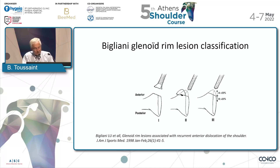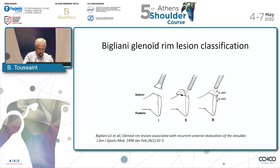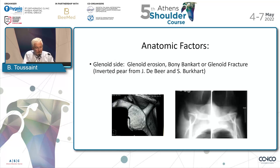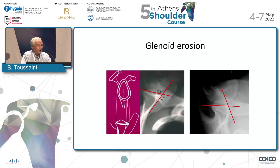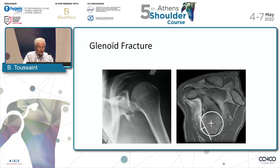The glenoid rim fracture is very, very important — you have seen this this morning. The first to develop a classification was Bigliani, with the Bigliani glenoid rim lesion classification in three stages. It is very important to check the glenoid side, because there is not only a bone fracture — there is glenoid erosion, bony Bankart, and a full glenoid fracture. Glenoid erosion should be checked with the West Point view, or Bernageau view for the French.